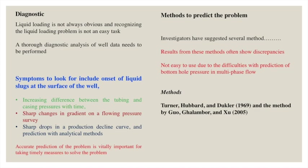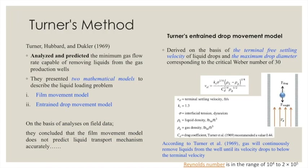Turner 1969 and Coleman 1991 are commonly used in the oil and gas industry. The Turner method is related to the separation taking place in a vertical separator. Turner, Hubbard, and Duckler in 1969 analyzed and predicted the minimum gas flow rate capable of removing liquid from a gas producing well. They presented two mathematical models: the film movement model and the entrainment drop movement model. Based on field data analysis, they concluded that the film movement model does not accurately predict liquid transport, so they relied on the entrainment drop movement model.